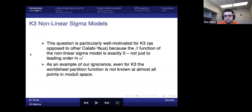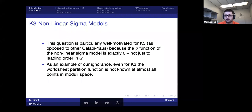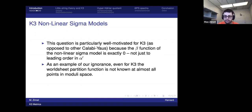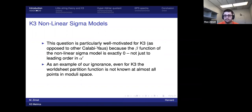This question is particularly well motivated for K3 as opposed to other Calabi-Yau manifolds because the beta function of the non-linear sigma model is exactly zero, so there are no alpha-prime corrections to the metric. The condition for conformal invariance is literally Ricci-flatness. Even for K3, one of the best-studied Calabi-Yau manifolds and CFTs more generally, the worldsheet partition function is known almost nowhere.